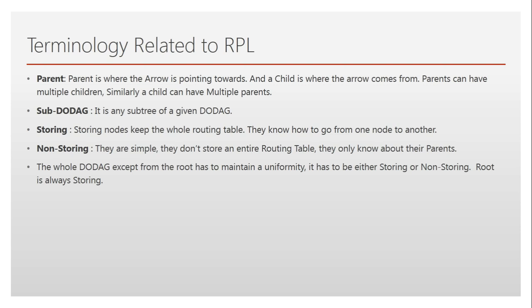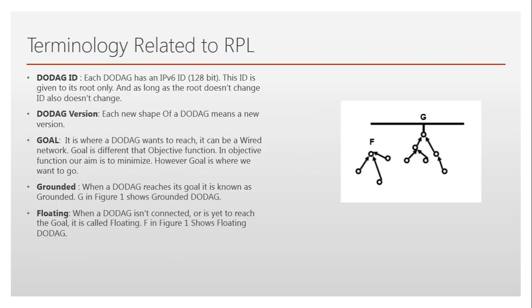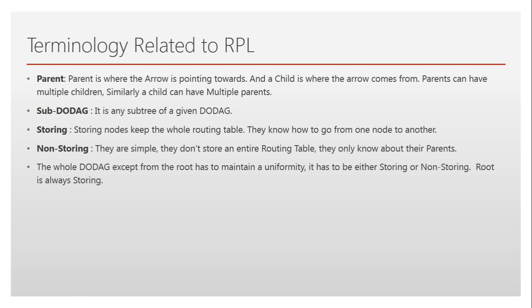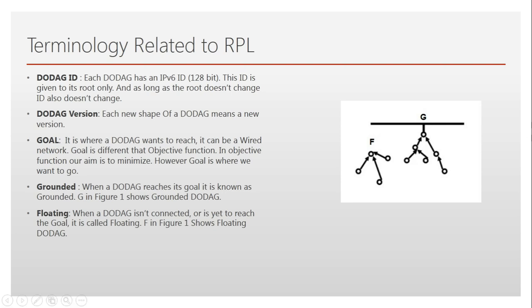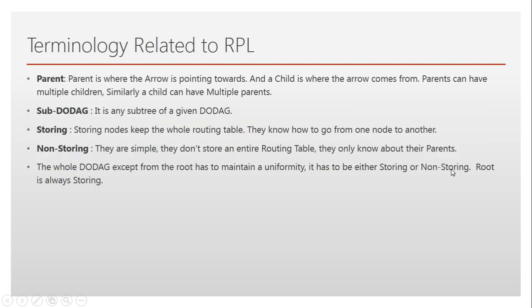A parent is the node that an arrow is pointing towards. Looking at the graph, the arrows point towards the common destination — that is the parent. Two nodes pointing towards a given node make that node their parent. A sub-DODAG is a sub-tree of a given DODAG. For example, within a DODAG we can identify sub-trees, and each of those sub-trees is a sub-DODAG.